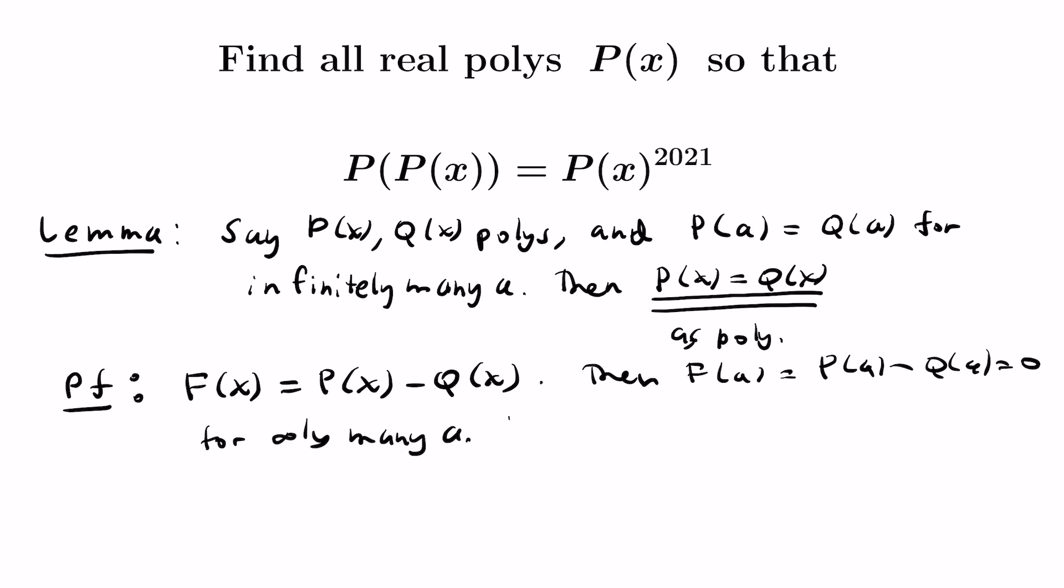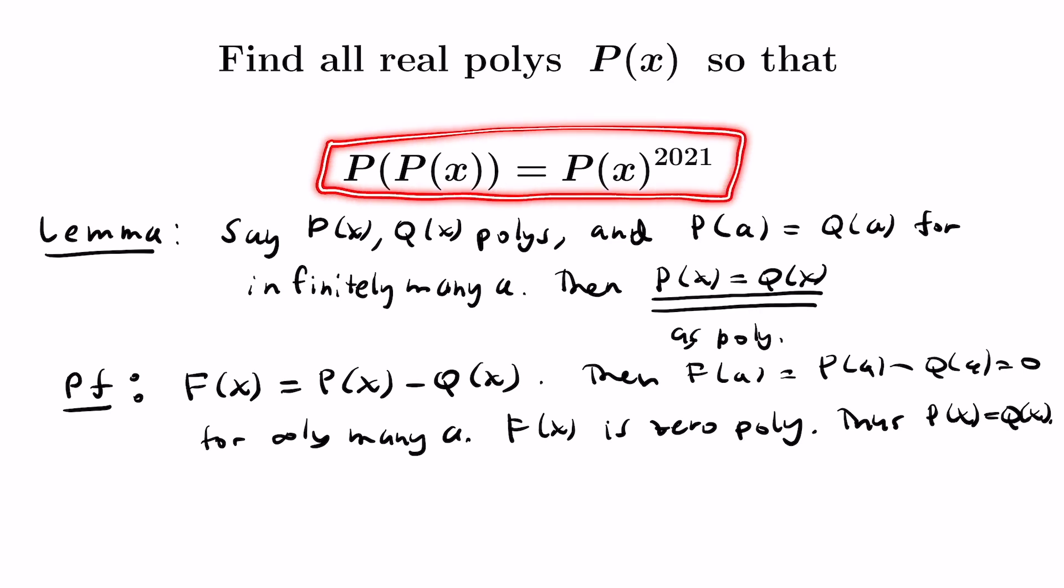We're going to construct the zero polynomial in an interesting way here. We'll let f of x be the polynomial q of x subtracted from p of x. Then for all these values a that we have, f of a is going to be p of a minus q of a, and that's zero for infinitely many a. So that means then that f itself is a zero polynomial. And if f is a zero polynomial, that means that the two polynomials, p of x and q of x, are actually identically the same.